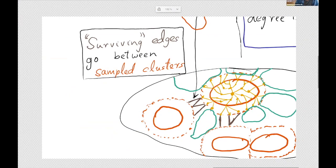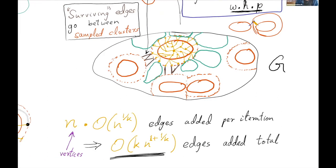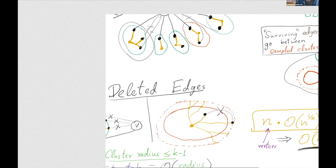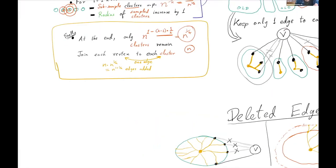To recap the analysis of the size of the spanner: case one only adds O(n) edges, which is fine. Case two adds a number of edges equal to the number of vertices multiplied by n^(1/k), which is the expected degree. Over k iterations, we add k times n^(1+1/k) edges total. There are ways to get rid of this factor of k, but we won't bother with that. We run for k minus 1 iterations because after that, the number of remaining clusters is exactly what we need to finally connect every remaining vertex to every remaining cluster.